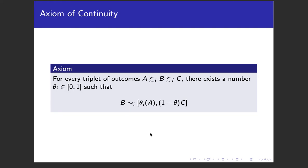The first axiom is continuity. If we have three outcomes where a is weakly preferred to b which is weakly preferred to c, there exists some number theta between zero and one such that a probabilistic combination of a and c is indifferent to b. For example, imagine a is $100, b is $50, and c is $0. Depending on your risk aversion, you might be indifferent between receiving $50 and a gamble of 50% chance of $100 and 50% chance of $0, or you might need an 80% chance of $100 and 20% chance of $0.